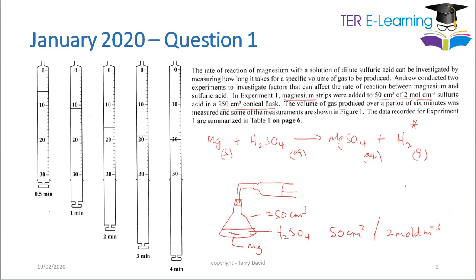When you have a question like this, try to understand what is being given. They've given us some diagrams here: after 0.5 minutes this is the volume, after one minute this is the volume of gas, after two minutes this is the volume of gas. Now let's go to the question and see what they're asking.